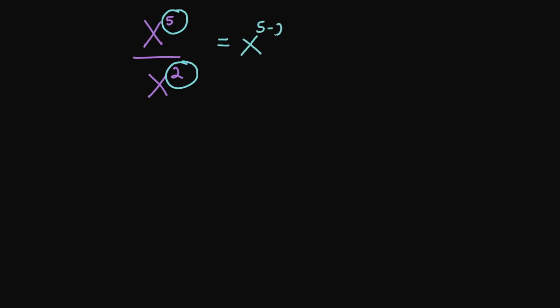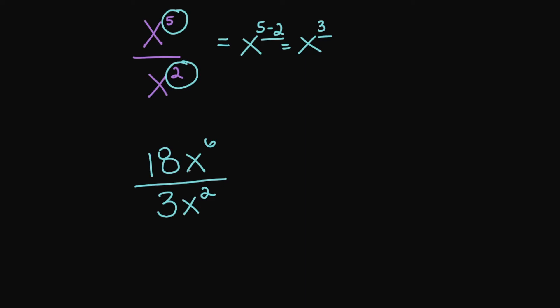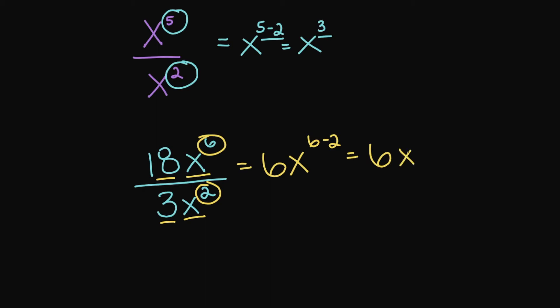If you have x to the fifth power divided by x to the second power, remember when you are dividing with the same base you need to subtract your exponents. So this turns into x to the 5 minus 2, which equals x cubed. So what if you had 18x to the sixth power divided by 3x squared? We divide 18 by 3, which gives us 6, and then subtract exponents: x to the 6 minus 2, giving us 6x to the fourth power.